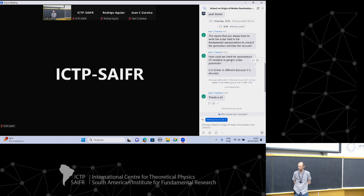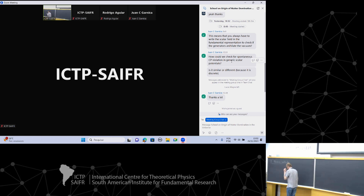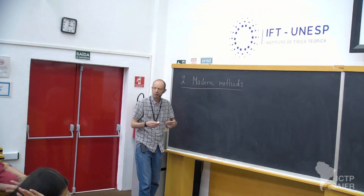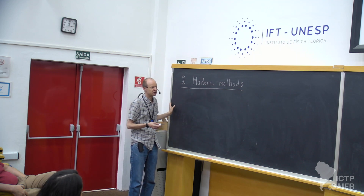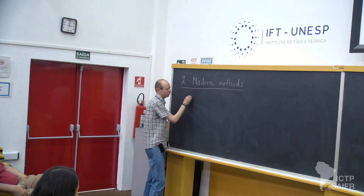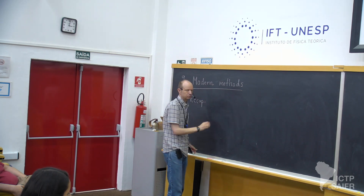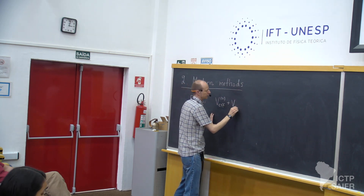This is the second lecture on modern methods of finite temperature thermal field theory. Yesterday we saw how one gets going when trying to find a phase transition in a simple scalar field model. What we found out was that one computes an effective potential, which can be computed at tree level and then with corrections.